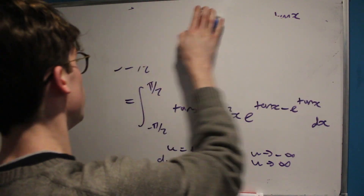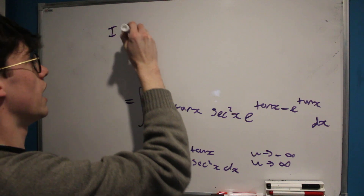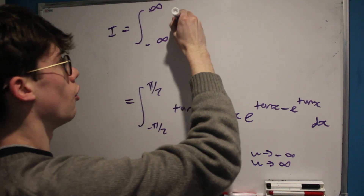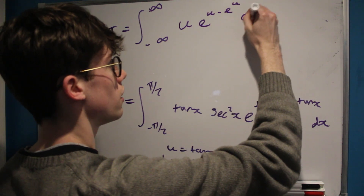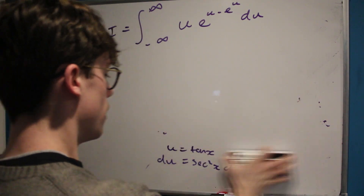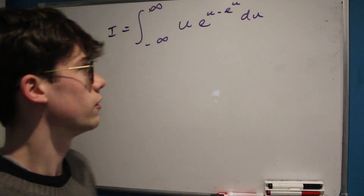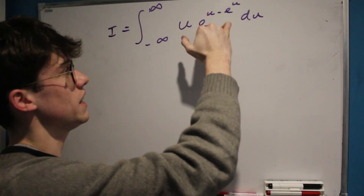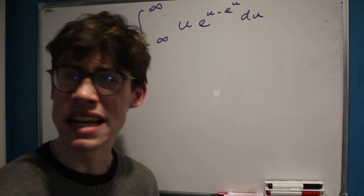So we can rewrite our target integral, which I'm going to call capital I, as the integral from negative infinity to positive infinity of u e to the u minus e to the u, with respect to u. Now the next issue I'm having with this integral — the thing that's putting me off being able to solve it — is the fact that I've got e to the power of e to the power of something. That's messy and I don't like it.